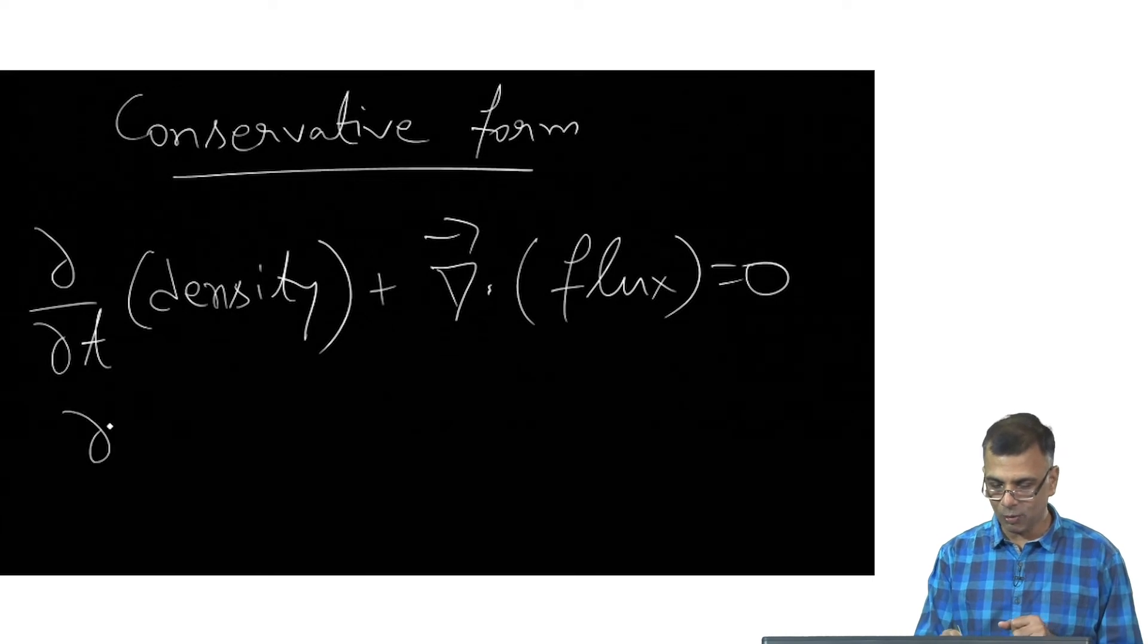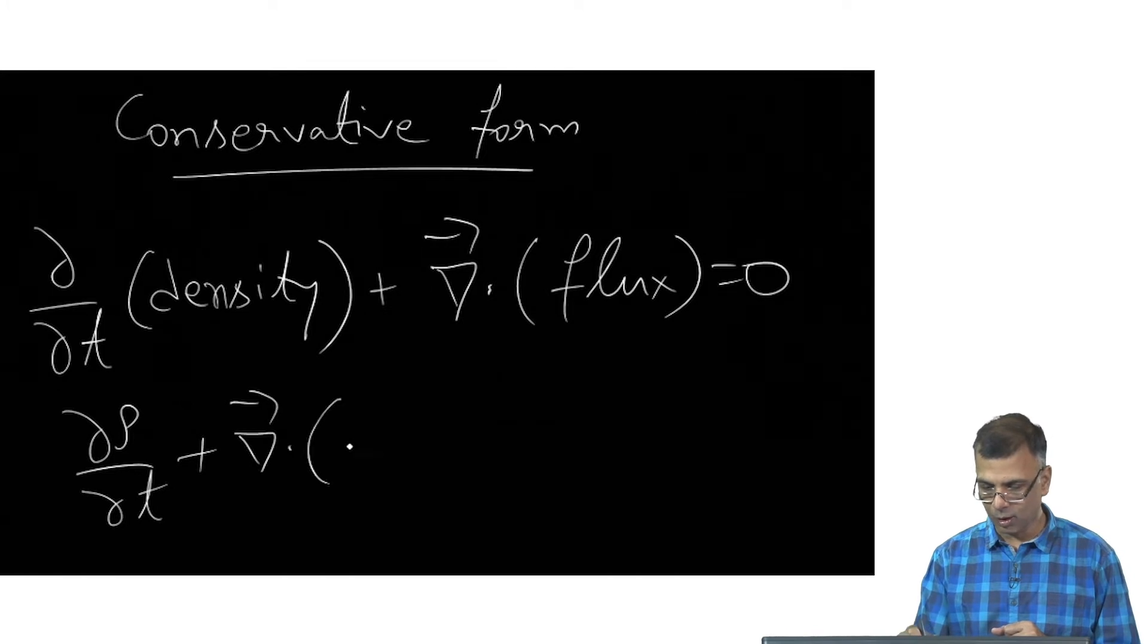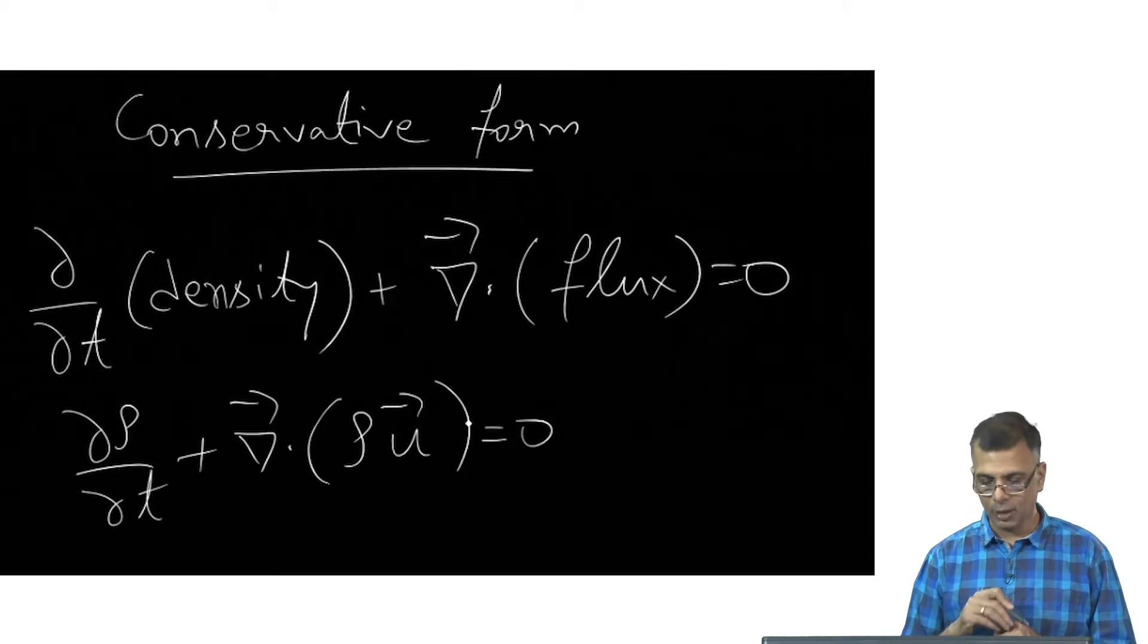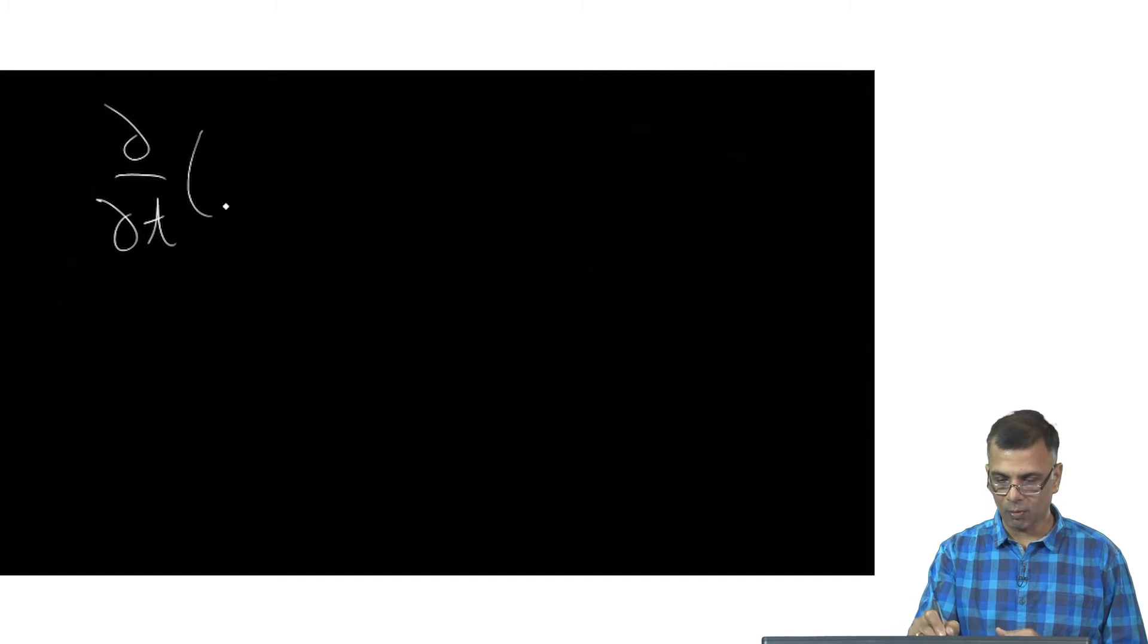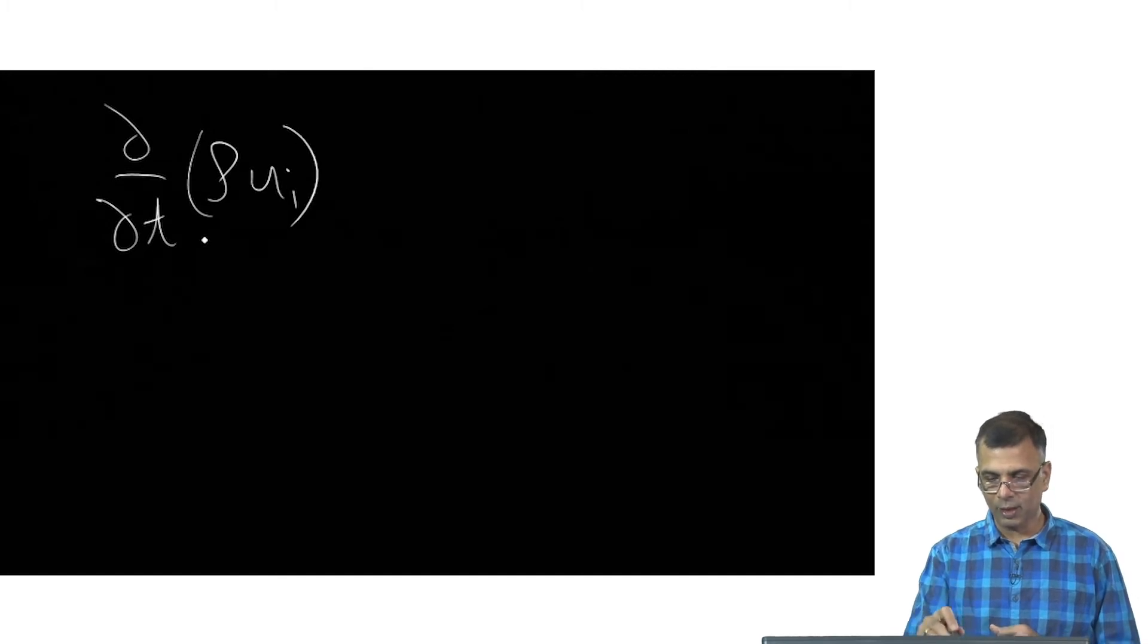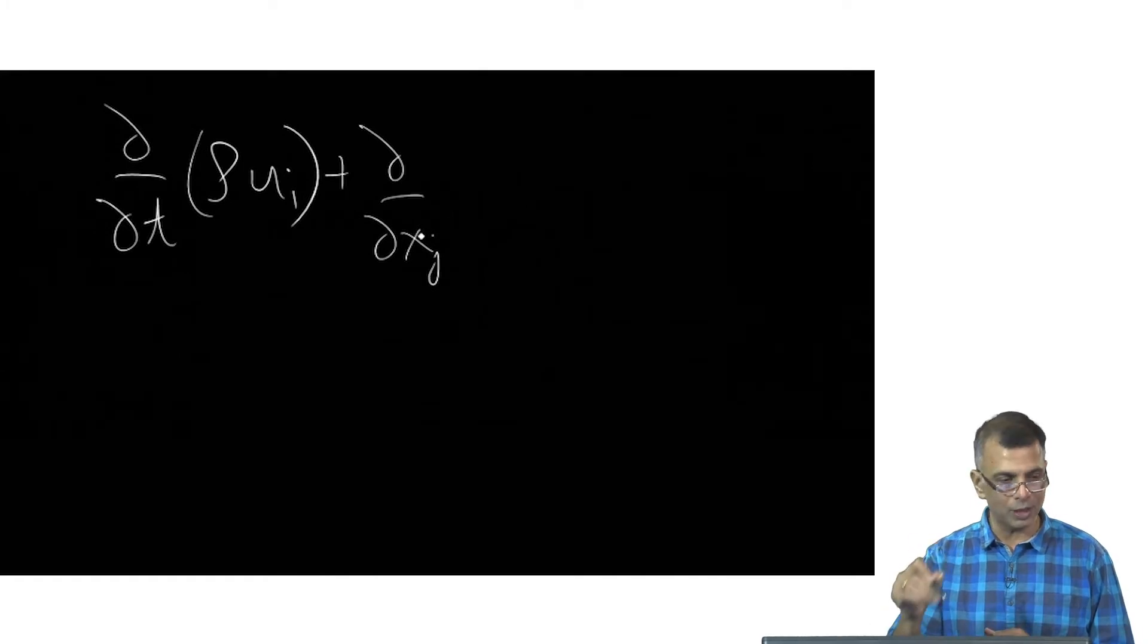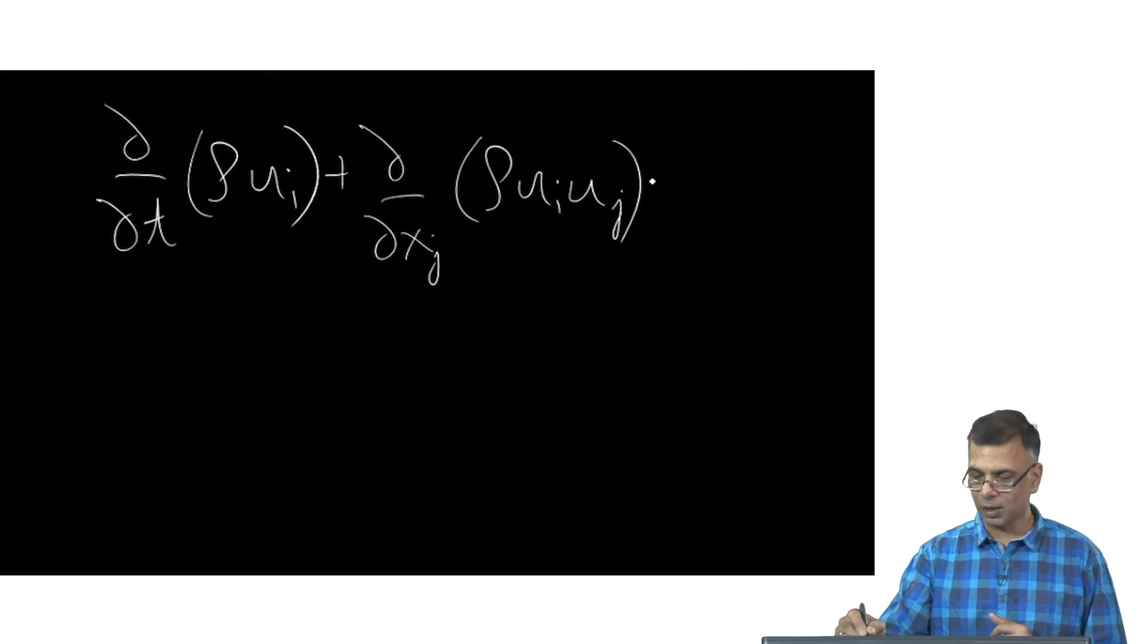So suppose this was mass density, you would have rho and the flux of mass is rho u. And if this was momentum density, you would have partial rho u over partial t like that, this would be momentum density and the flux of momentum density...